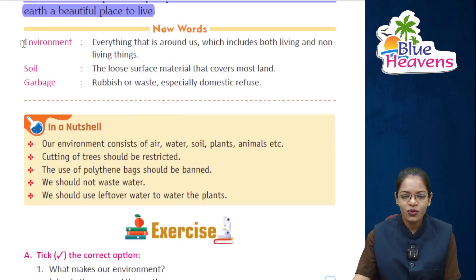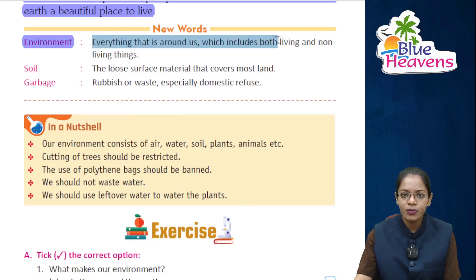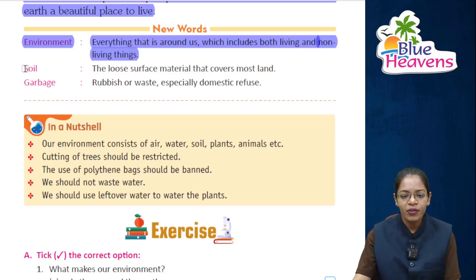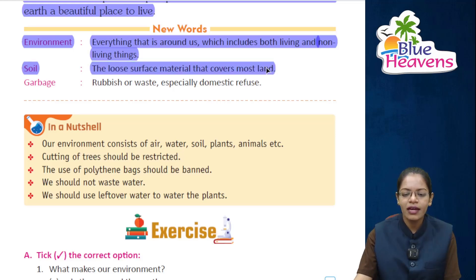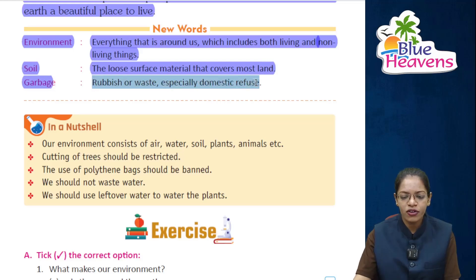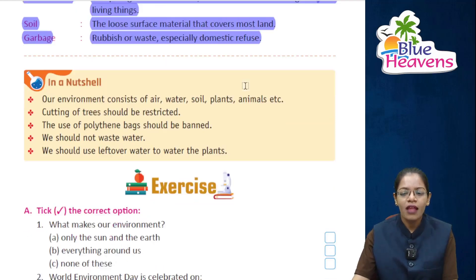Now let's see the new words. 'Environment' means everything that is around us, which includes both living and non-living things. 'Soil' means the loose surface material that covers most land. 'Garbage' means rubbish or waste, especially domestic refuse — यानी घर का कूड़ा।